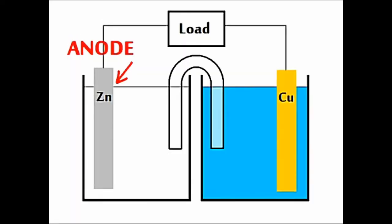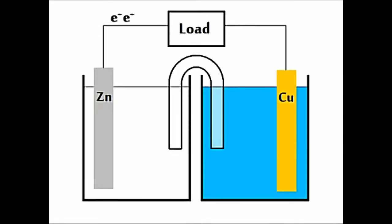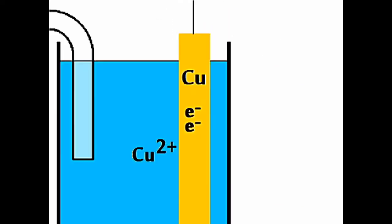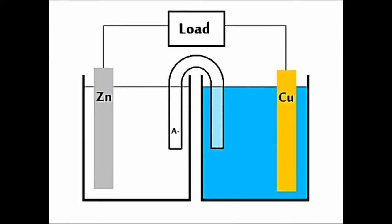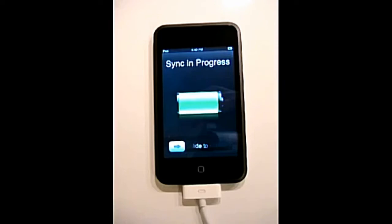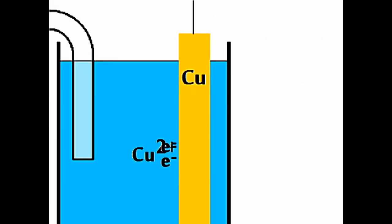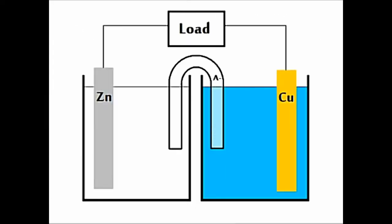We start at the anode. Electrons are lost there and go through the wire and through the load on fire. They enter the cathode and reduce the cations, and the anions go through the salt bridge back to where? Where? We start at the anode. Electrons are lost there and go through the wire and through the load on fire. They enter the cathode and reduce the cations, and the anions go to the salt bridge back to where? Where?